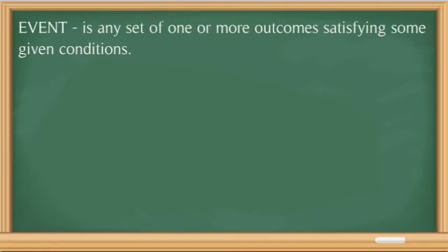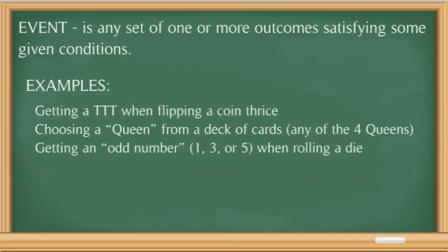Another term we need to know is event. When we say event, it is any set of one or more outcomes satisfying some given condition. In other words, an event is similar to an experiment, but there is a specific condition given. For example: getting TTT (3 tails) when flipping a coin thrice, choosing a queen from a deck of cards, or getting an odd number when rolling a die.